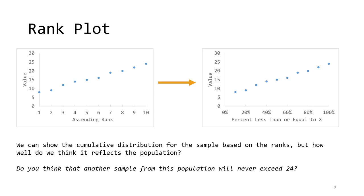A rank plot is one way to look at a dataset based on order statistics. Simply plot the rank of the data on x and the value of the data on y, and you produce a rank plot. It is easy to convert the rank plot into an empirical quantile plot by dividing the rank by the sample size, which produces an estimate for the cumulative distribution function. However, this has the limitation that it estimates the non-exceedance probability for the largest observation to be 1, meaning that the largest value cannot be exceeded. It raises the question: do you really think that another sample from this population will never exceed the value 24?